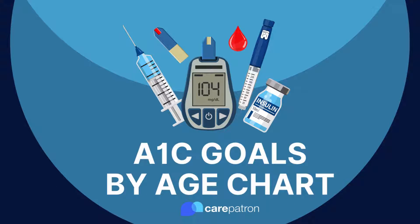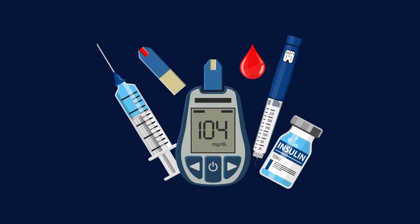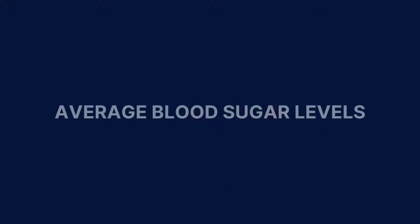An A1C goals by age chart is an excellent tool for healthcare professionals and patients to refer to when considering their blood sugar level goals. It is a chart that provides recommended A1C goals or average blood sugar levels for people of different ages.